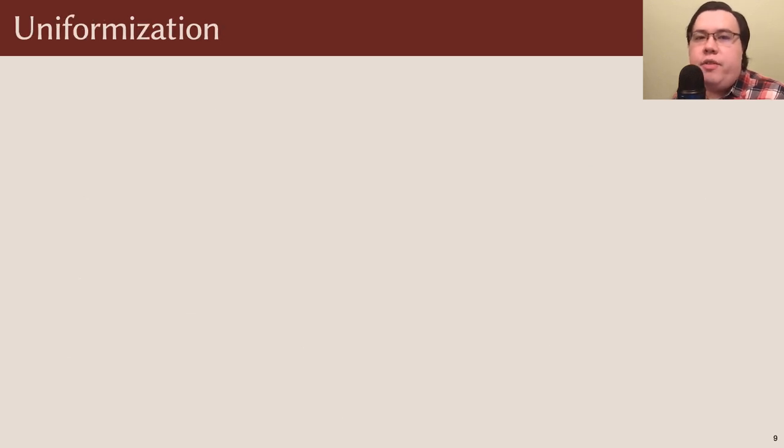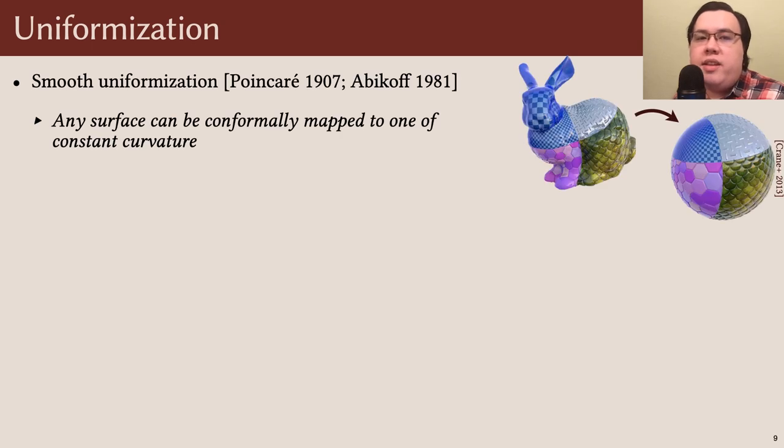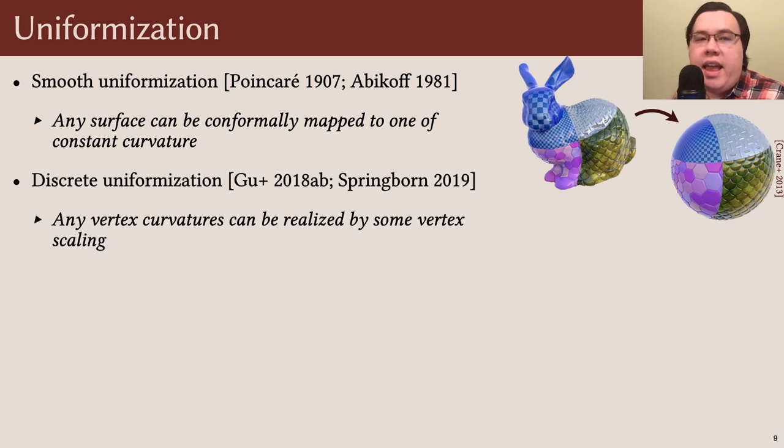One of these important properties captured by vertex scaling is the uniformization theorem. In the smooth setting, the uniformization theorem guarantees that any surface can be conformally mapped to one of constant curvature. Amazingly, there's a discrete analog which similarly states that any valid vertex curvatures can be realized by some vertex scaling no matter how wild the mesh is.